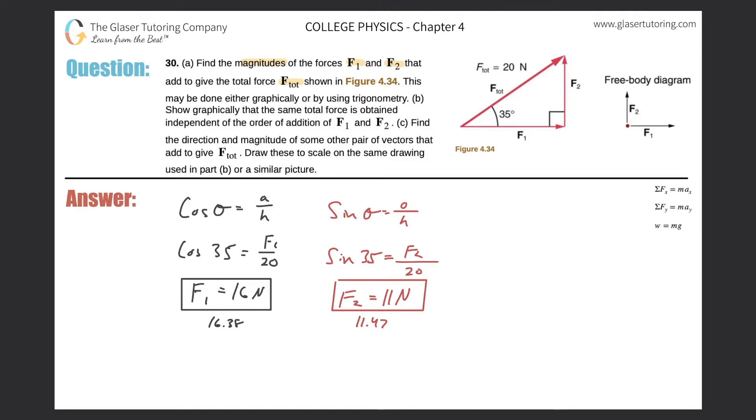Let's move on to Part B. So Part B now says, show graphically that the same total force is obtained independent of the order of addition of F1 and F2. So basically, take a look at the graph on the right-hand side. What I'm going to do here is I'm going to draw a coordinate system. So the origin is going to lie right here.